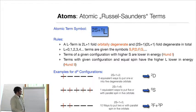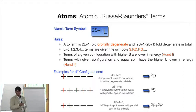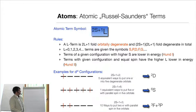There are Hund's rules that tell you about the energetic ordering of these terms. For terms of a given configuration, the one with higher total spin S is lower in energy — we understand this from the Hartree-Fock method, because the exchange integral stabilizes states with parallel spin. The second Hund's rule says that terms with given configuration and equal total spin have the higher angular momentum lower in energy.